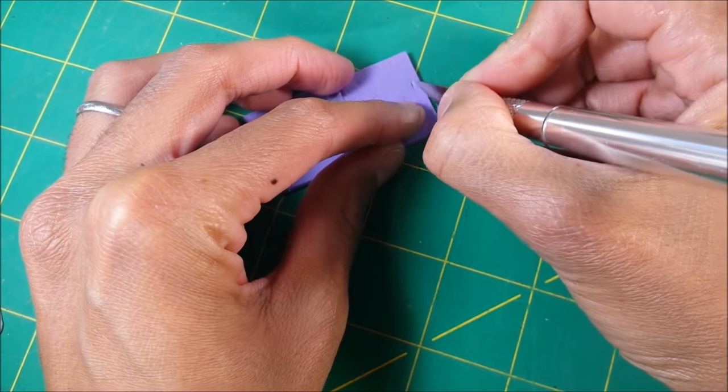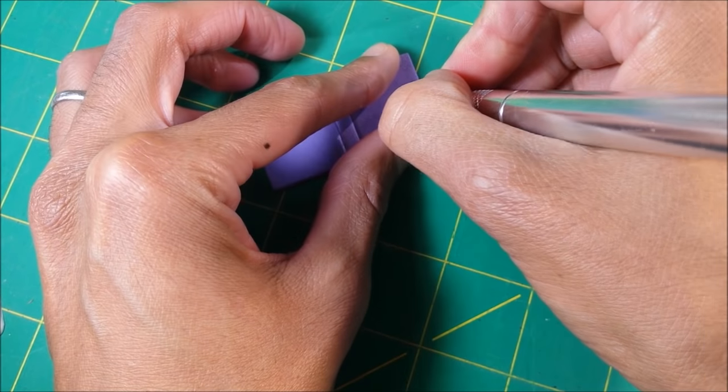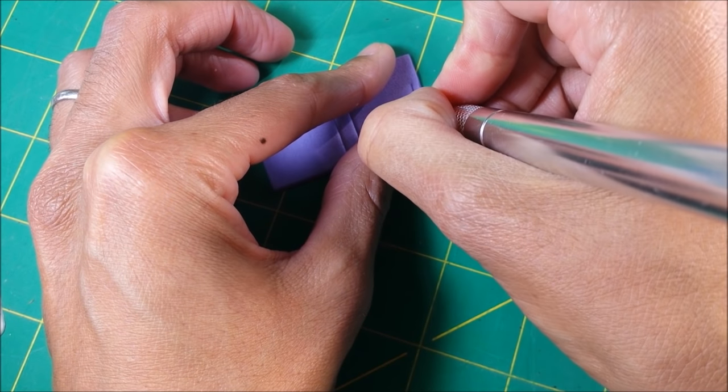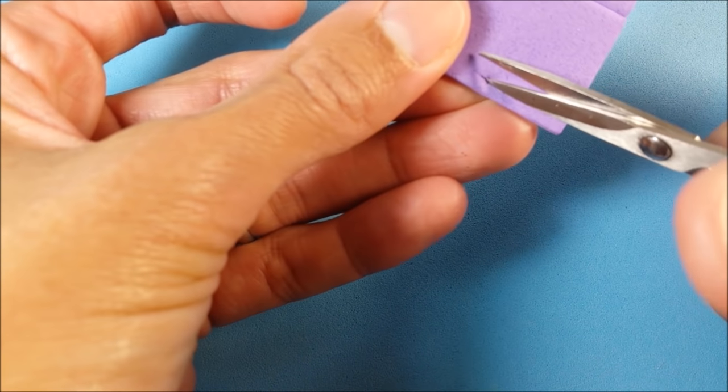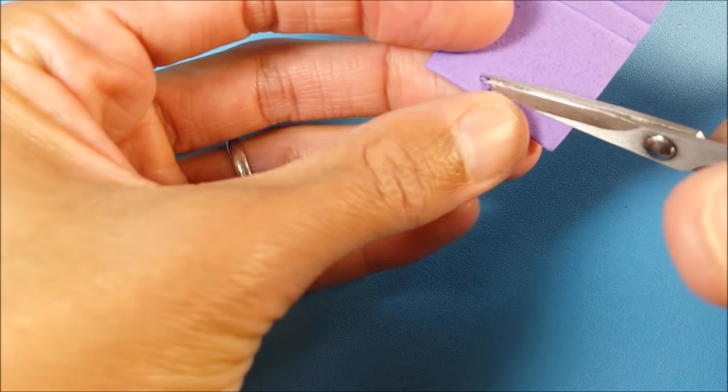Then just again using my exacto knife to make a little mark, I cut out. Then with tiny scissors on the back side of my craft foam, I'm just cutting out that little area, just making it a little bit wider.